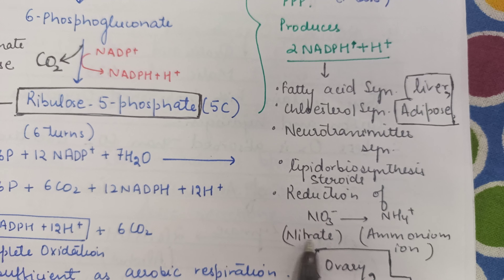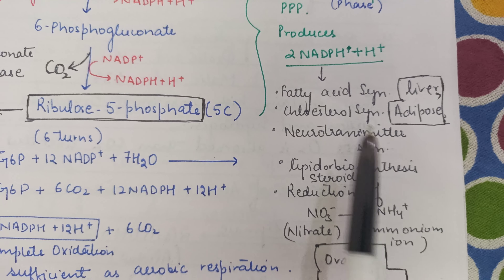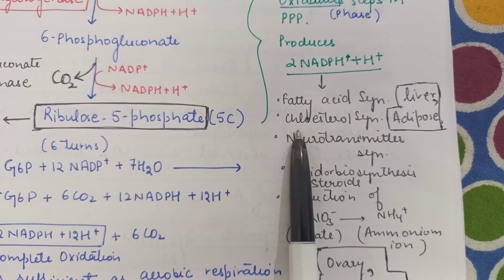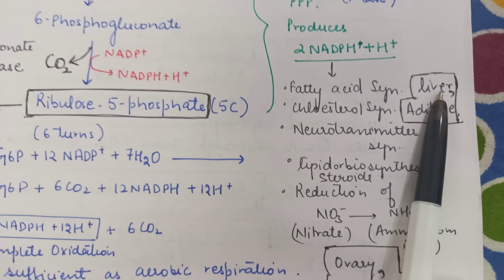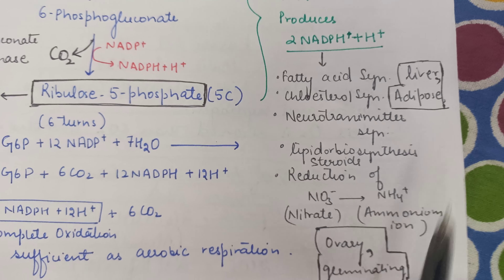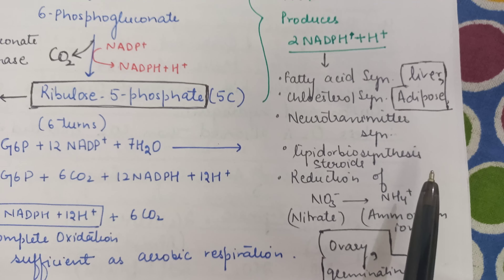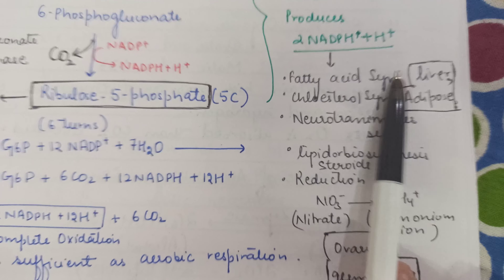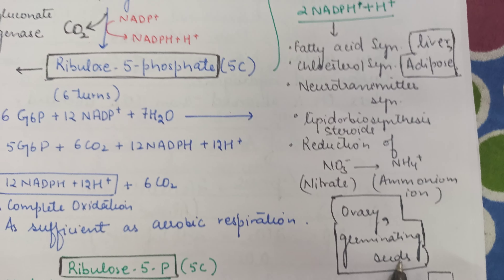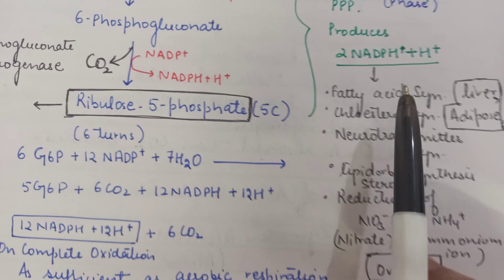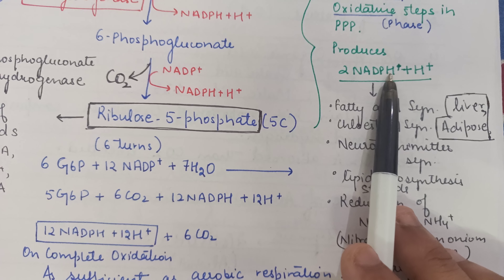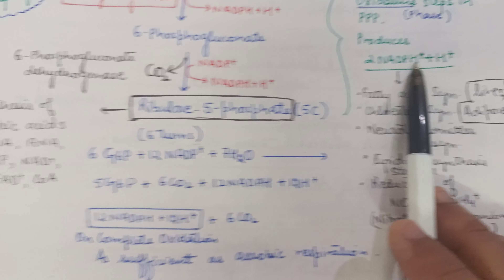These biosynthetic processes — fatty acid synthesis, cholesterol and steroid synthesis — take place in the liver, adipose tissue, ovary, and germinating seeds, all with the help of NADPH produced in the oxidative phase of the pentose phosphate pathway.